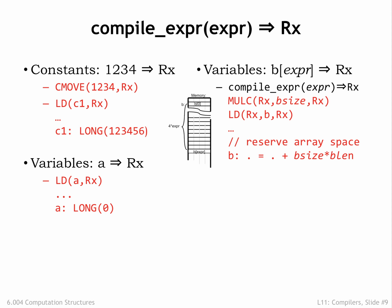We first invoke compile expression to generate code that evaluates the index expression and leave the result in Rx. That will be a value between 0 and the size of the array. We'll use a LOAD instruction to access the appropriate array entry, but that means we need to convert the index into a byte offset, which we do by multiplying the index by bsize, the number of bytes in one element.